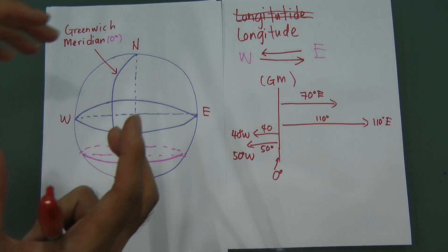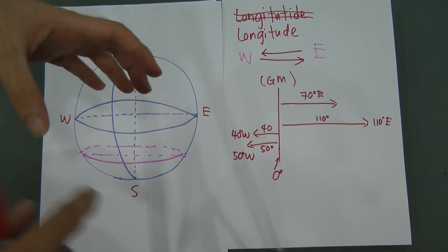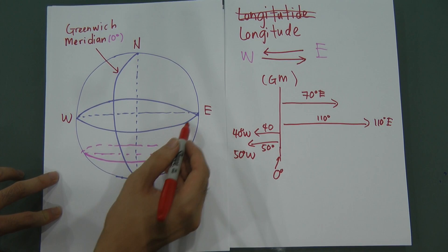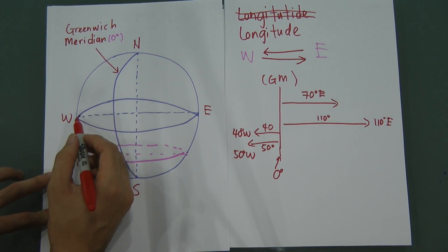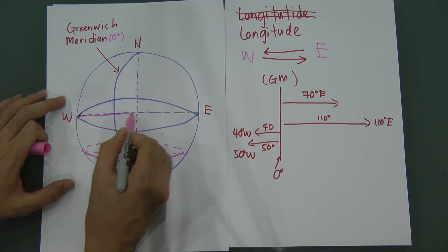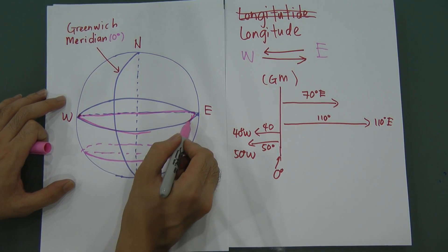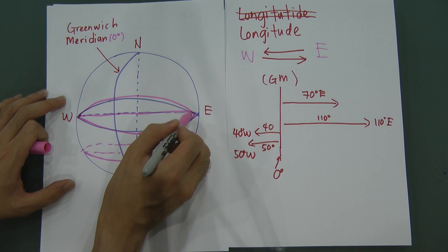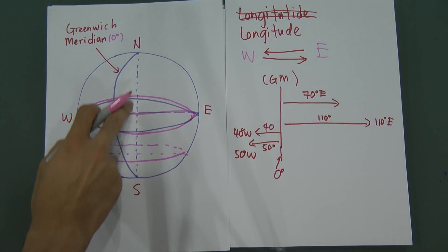You have to understand that the whole earth is 360 degrees. From one side to the other is 180 degrees, and the other half is also 180 degrees, giving a total of 360 degrees.